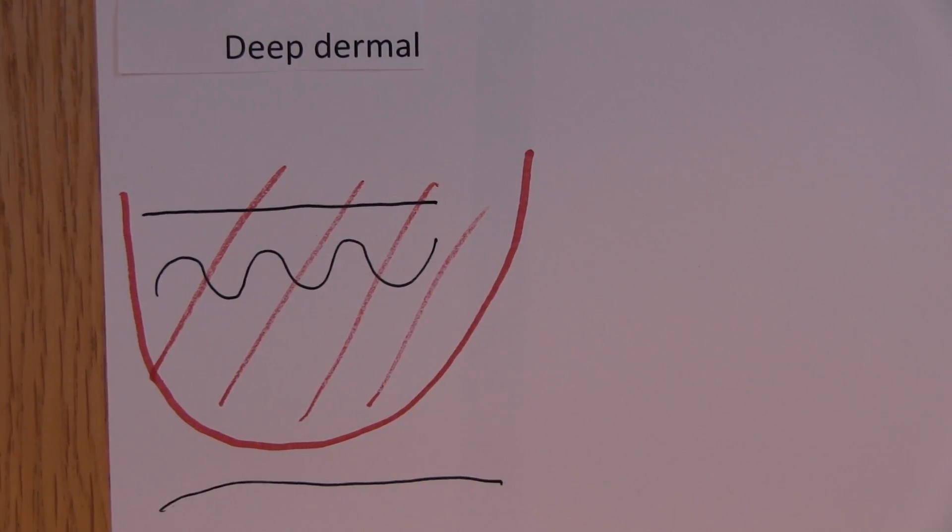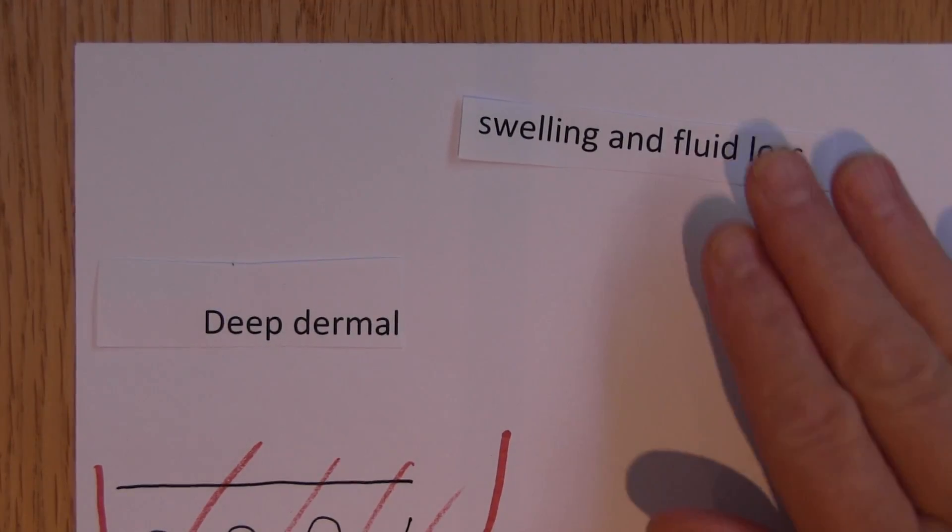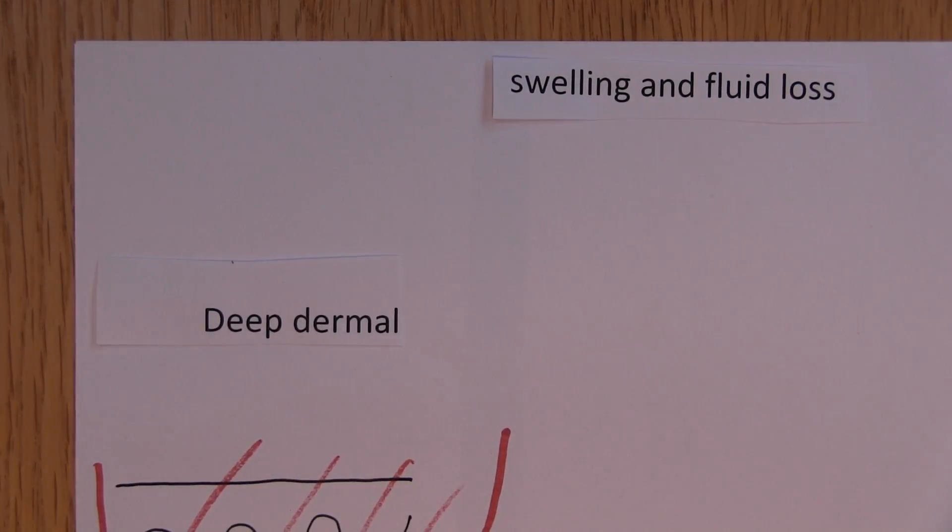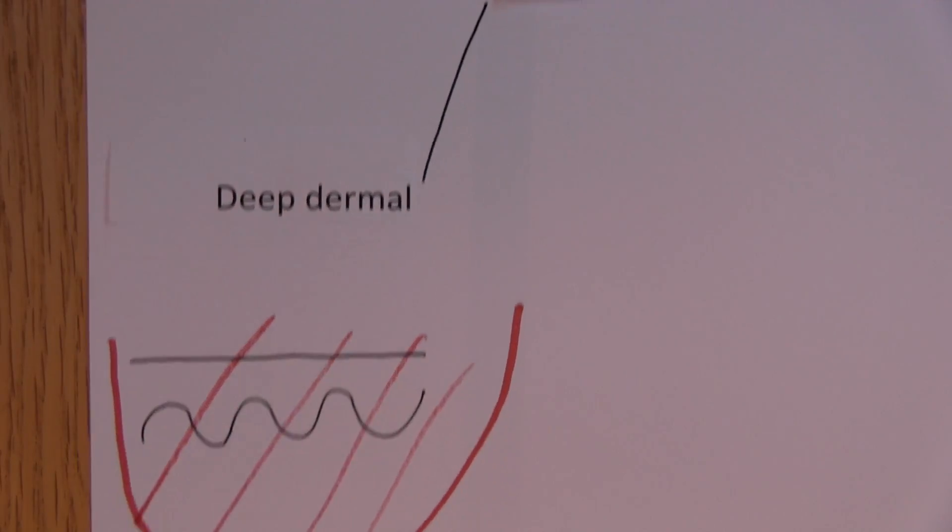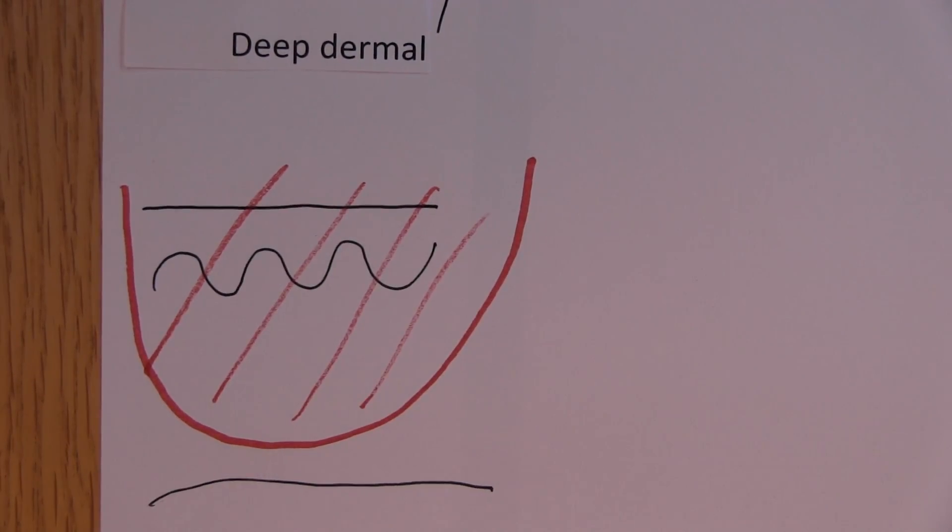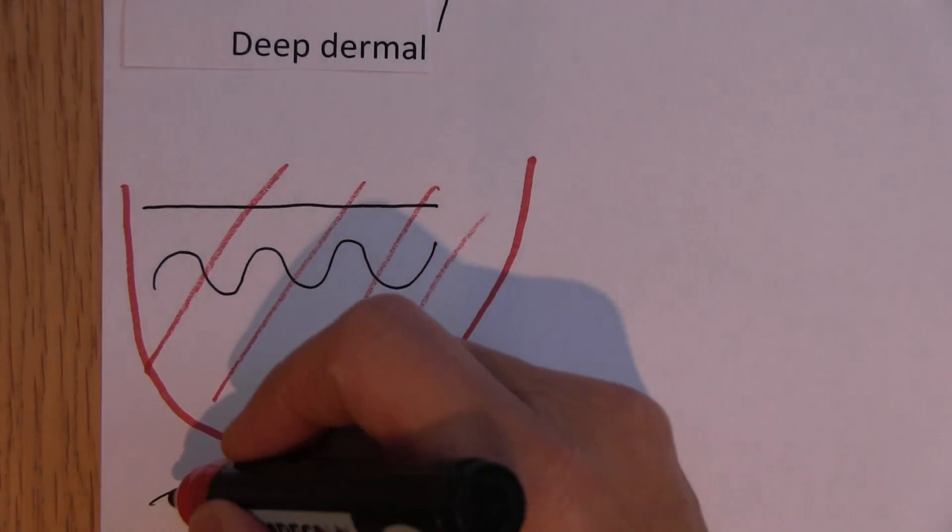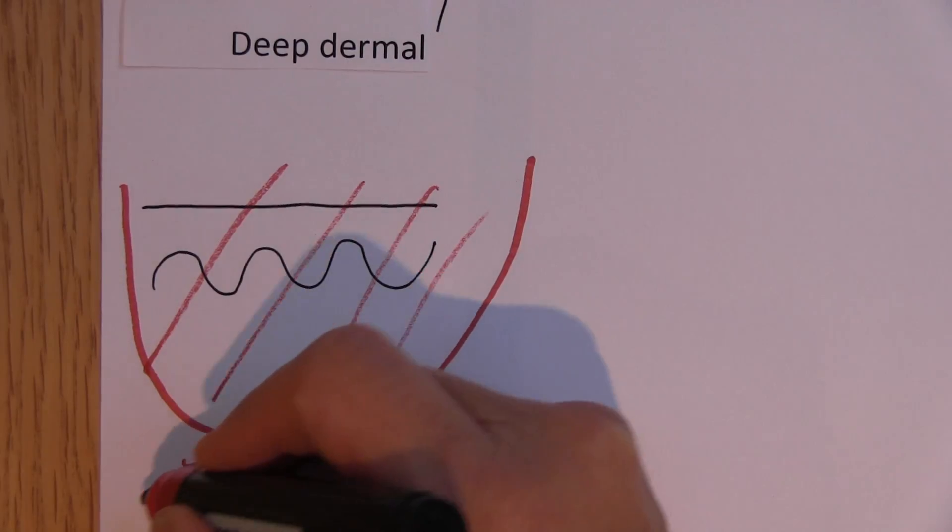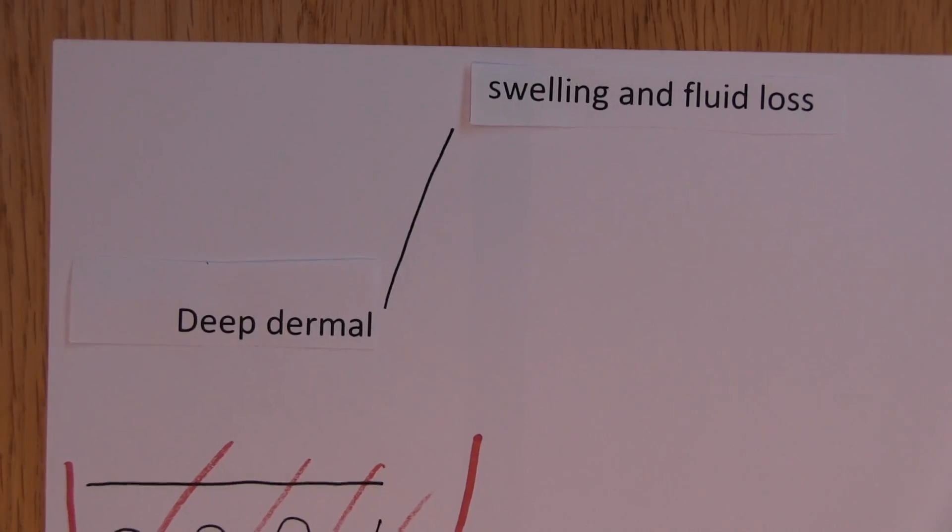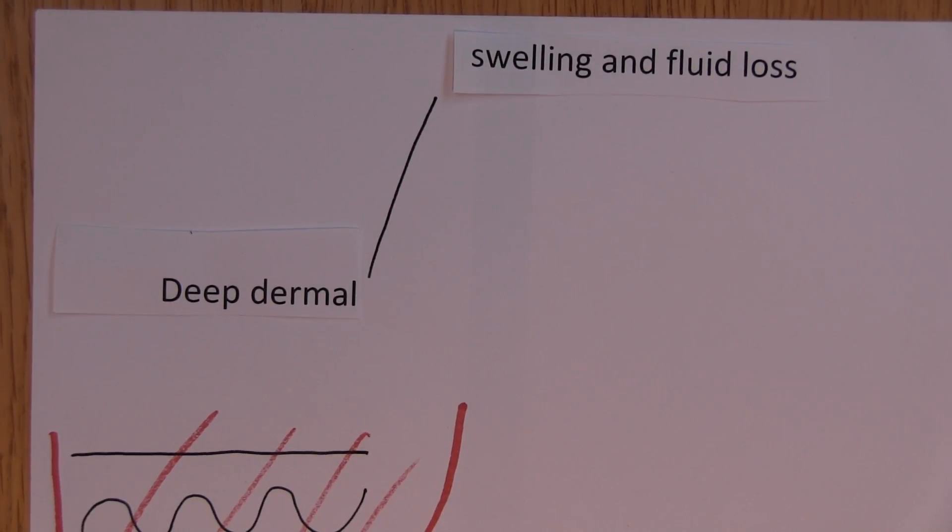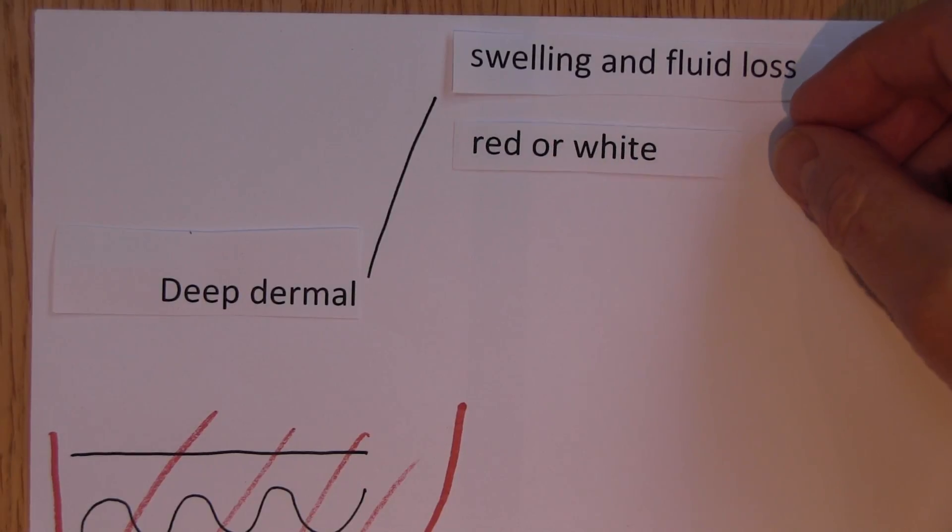So how are we going to recognize these? With deep dermal burns, they're still going to be swelling and fluid loss, because there's going to be some preserved vasculature deep down in the lower parts of the dermis. So there might be a few small capillaries left down here, and a lot have been burnt away, but there's going to be some left, so we can still get the swelling of the inflammatory exudates and the fluid loss.